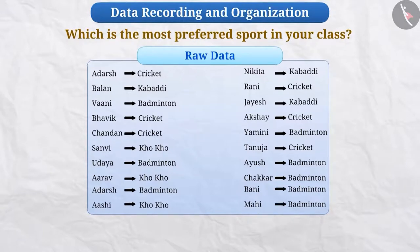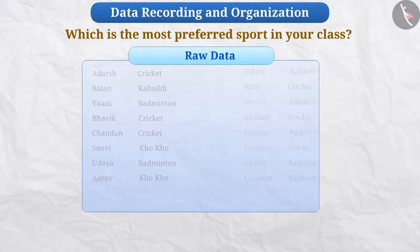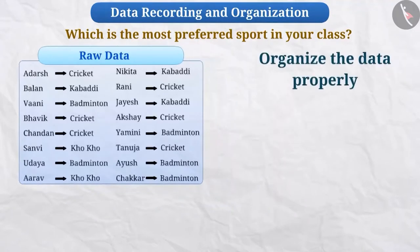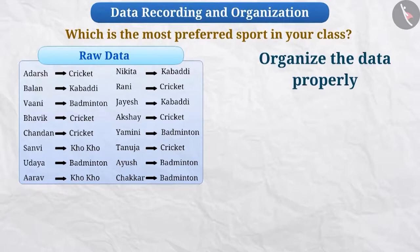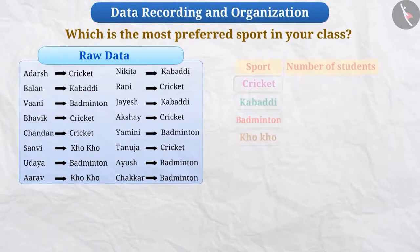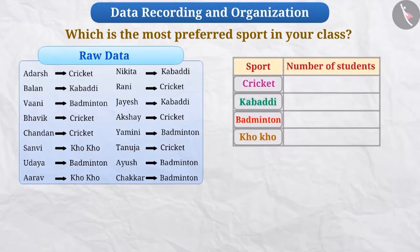In such a situation, we need to organize the data properly so that we can understand and use the data obtained more effectively. We will write the names of the sports on one side and make as many tally marks as the number of students who liked them beside each name.